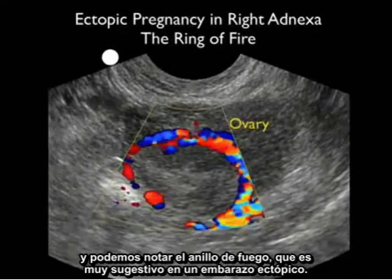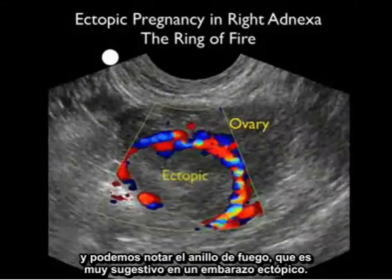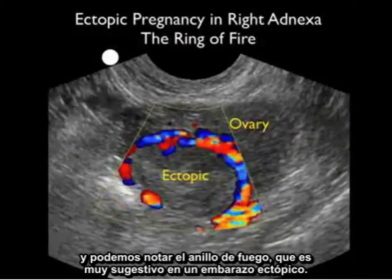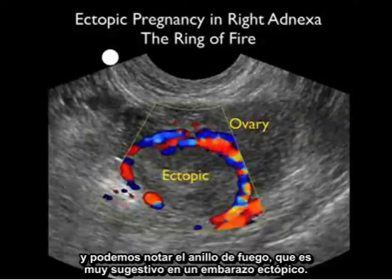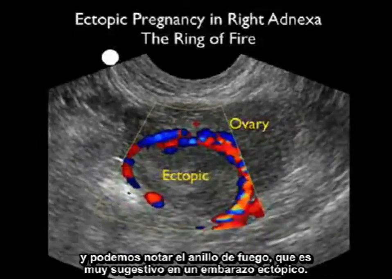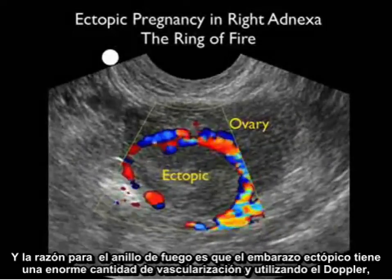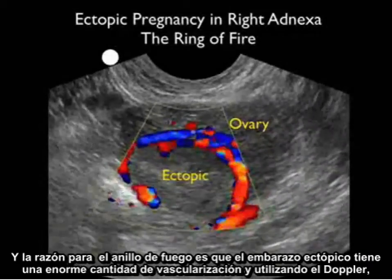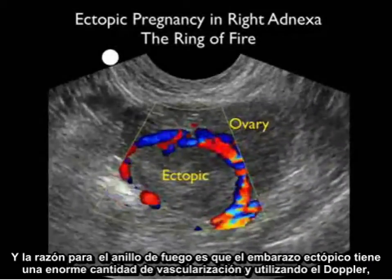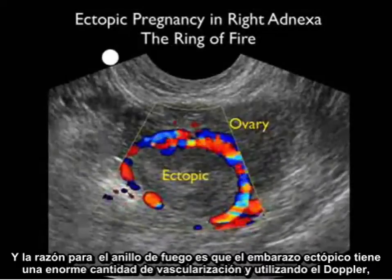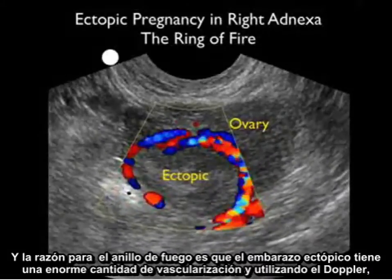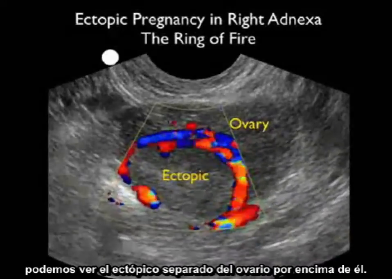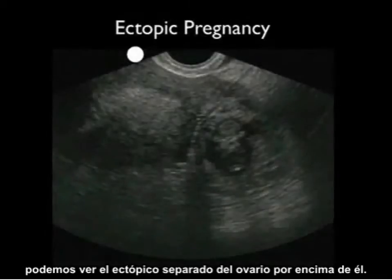we notice the presence of the ring of fire, very suggestive of an ectopic pregnancy. The reason for the ring of fire is that the ectopic pregnancy pulls a huge amount of vascularity towards it. And using the Doppler, we can see and separate the ectopic from the ovary above it.